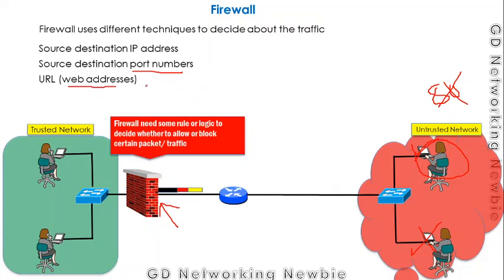We can also allow or block traffic based on a specific URL or web address — for example, www.something — we can block traffic from that particular URL. These are different options to decide whether to allow or discard particular traffic.